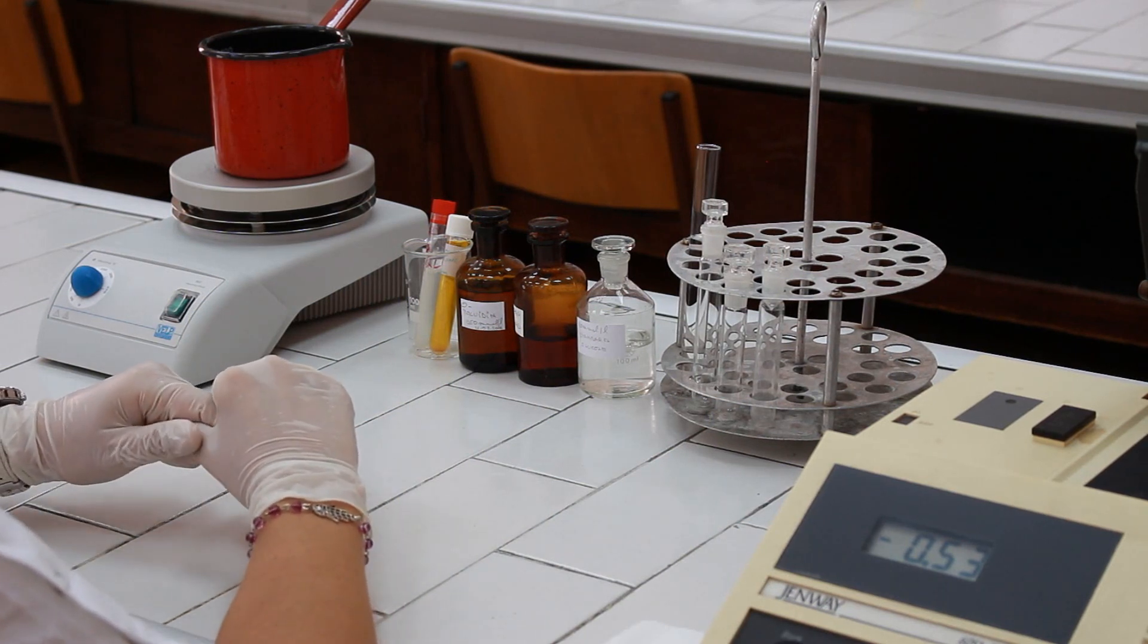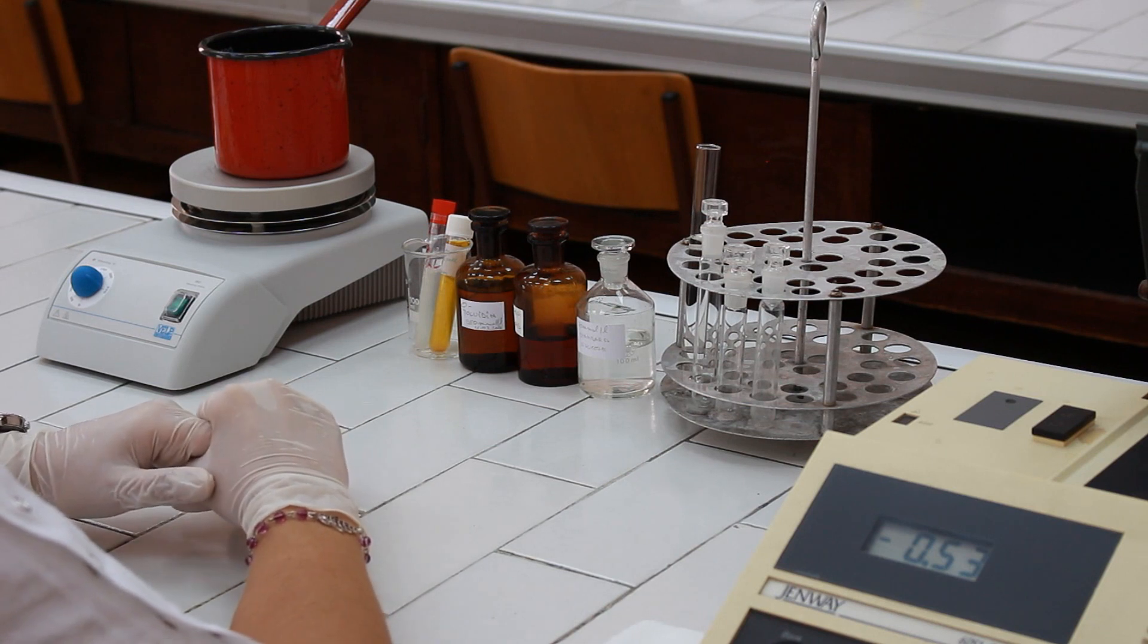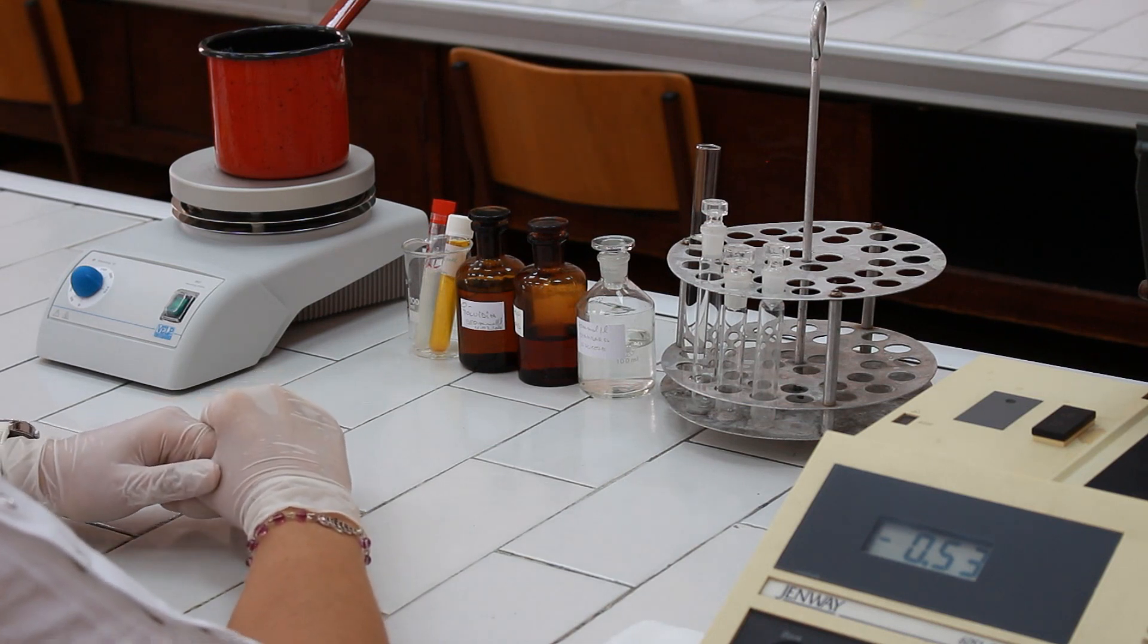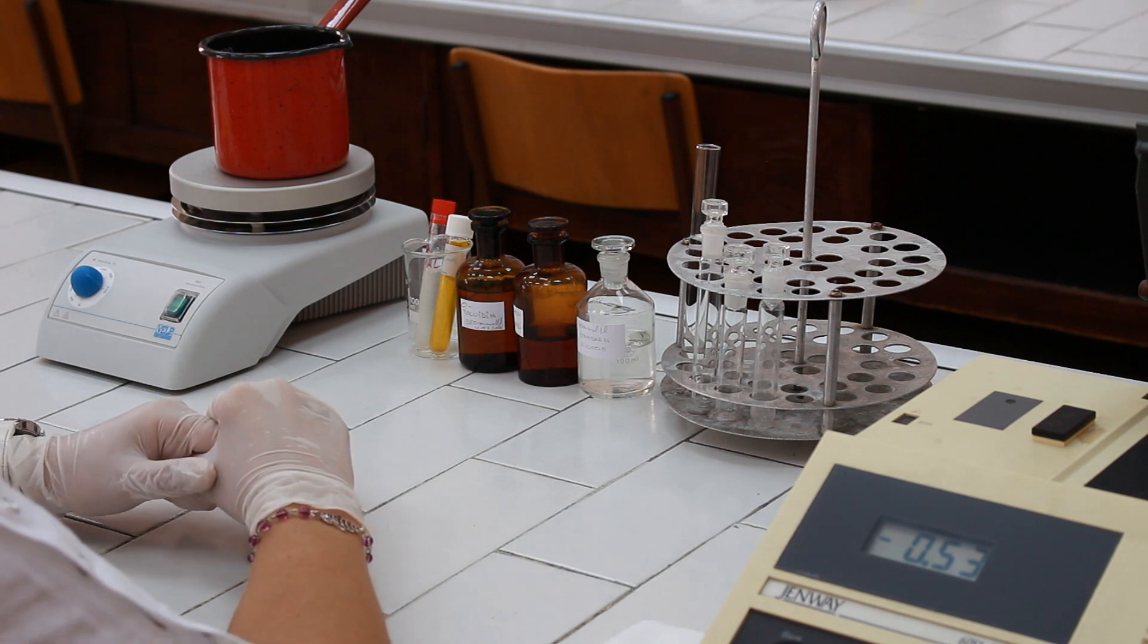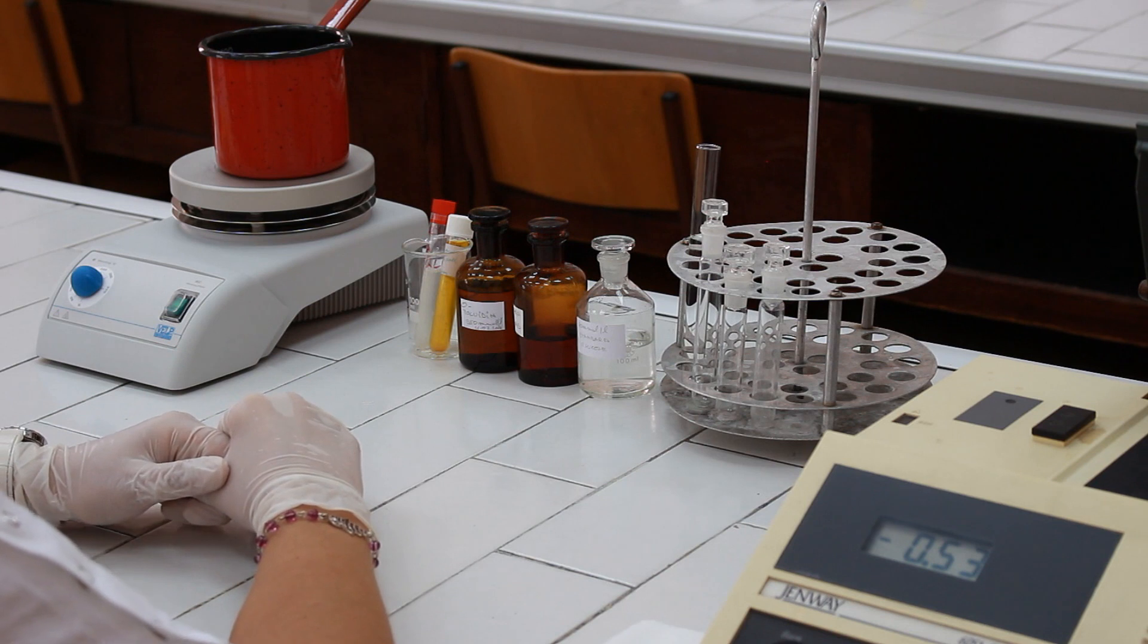Determination of blood glucose levels by orthotoloidin method. Orthotoloidin method is a chemical method for determination of blood glucose levels, which is based on the reaction of glucose with orthotoloidin or some other aromatic amines.